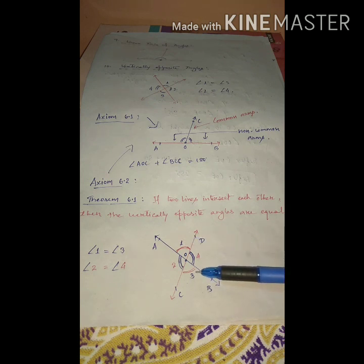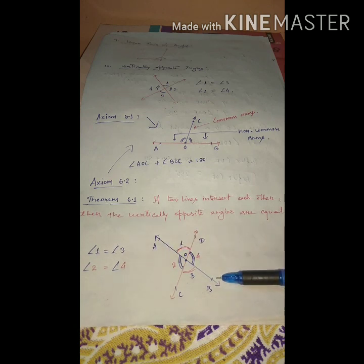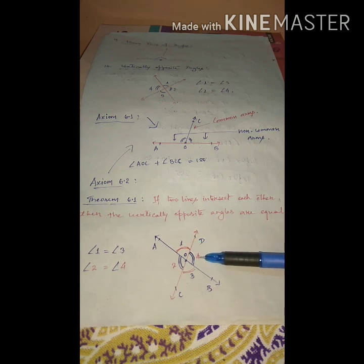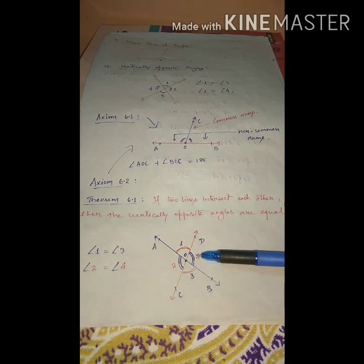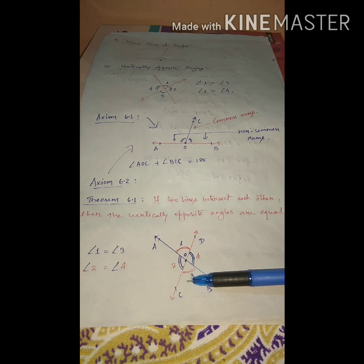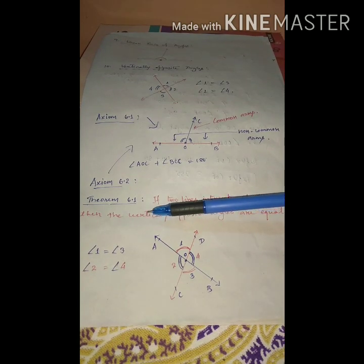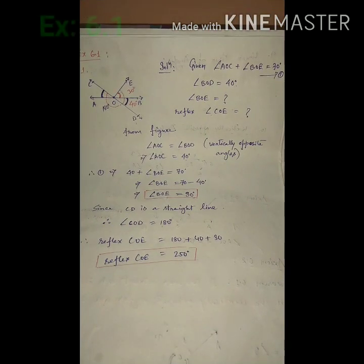The proof is given in your book. To prove vertically opposite angles are equal: ray OD stands on line AB, so the sum of angles 1 and 4 is 180 degrees. Similarly, OB stands on line CD, so the sum of angles 4 and 3 is also 180 degrees. Comparing these two, angle 1 equals angle 3. We need Axiom 6.1, Axiom 6.2, and Theorem 6.1 — write these from your textbook. Next, we move to Exercise 6.1.